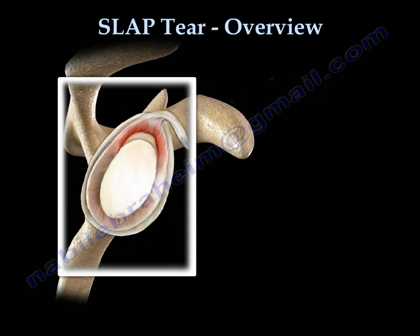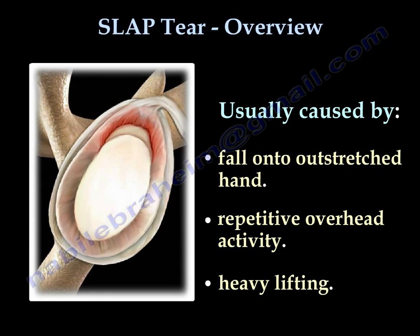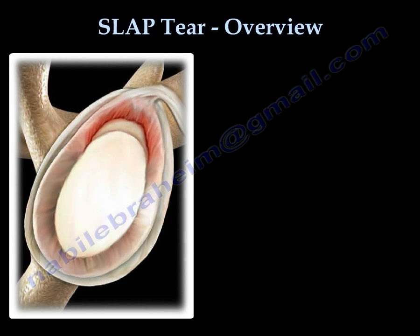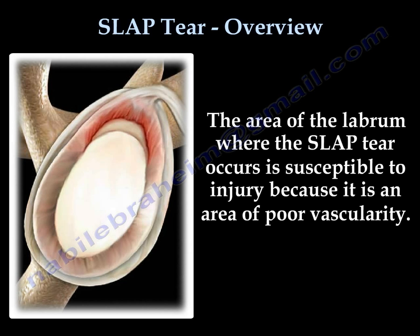A SLAP lesion is usually caused by a fall onto an outstretched hand, repetitive overhead activity, or heavy lifting. The area of the labrum where the SLAP tear occurs is susceptible to injury because it is an area of poor vascularity.